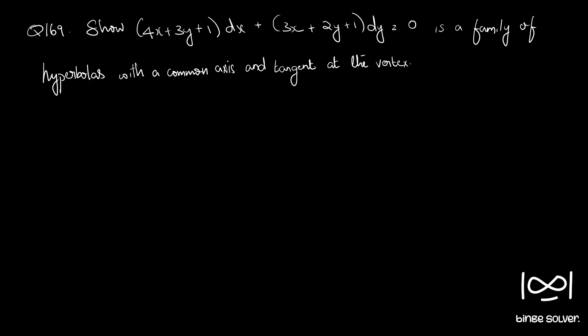Question number 169. Show that 4x plus 3y plus 1 dx plus 3x plus 2y plus 1 dy equals 0 is a family of hyperbolas with a common axis and tangent at the vertex.